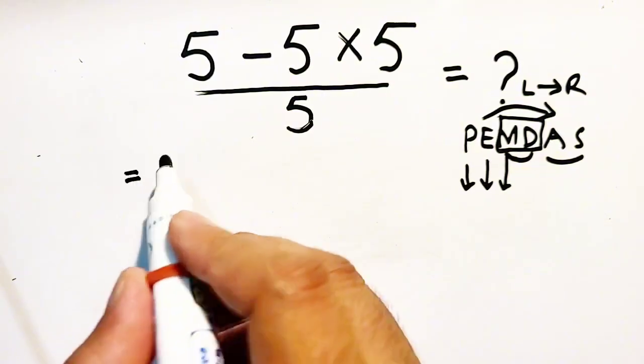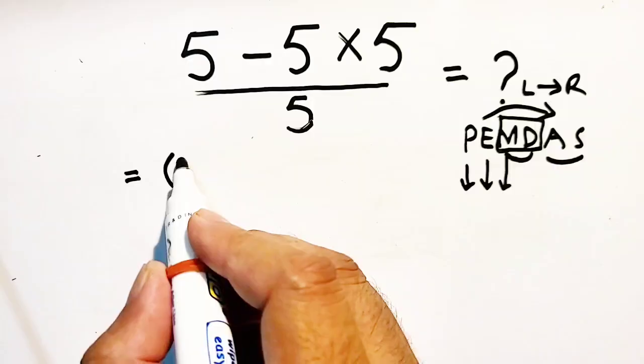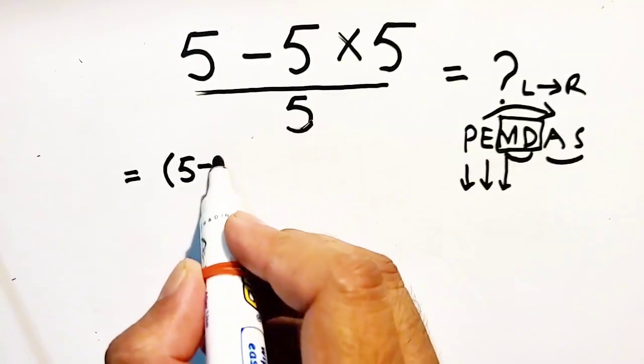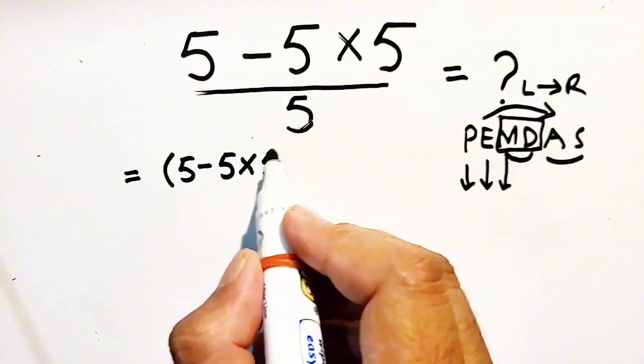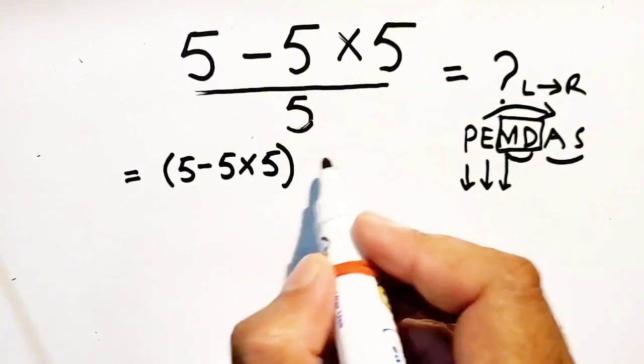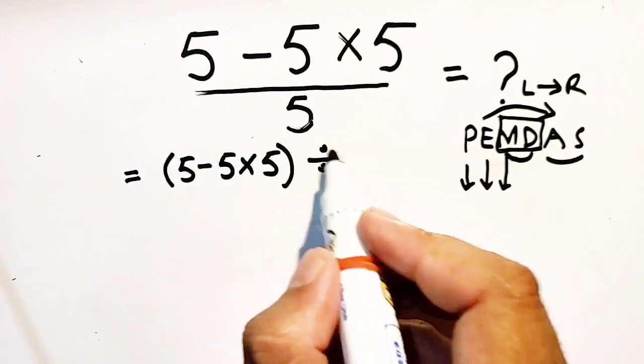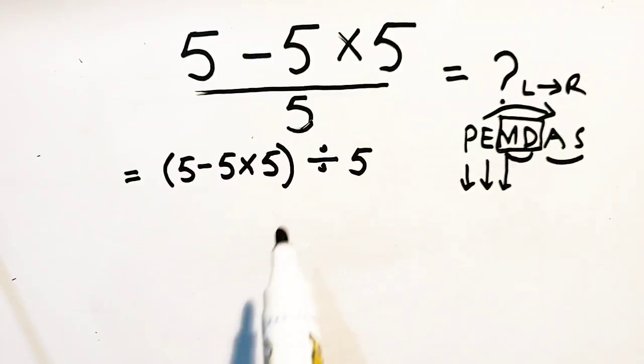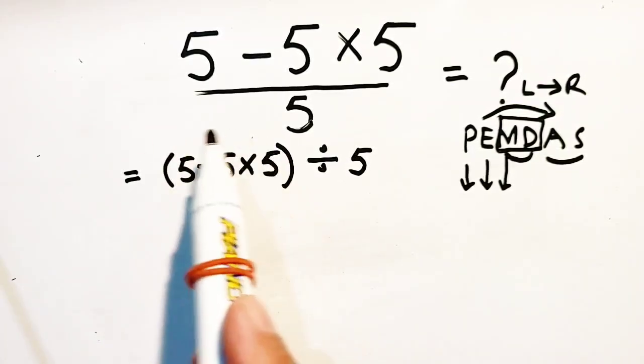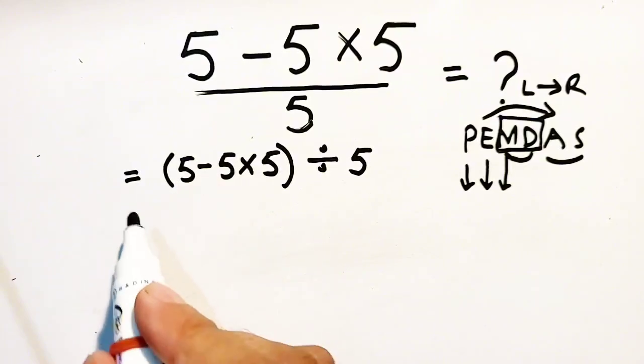We can write it as 5 minus 5 multiplied by 5, all divided by 5. Now, first of all, we will solve parenthesis.